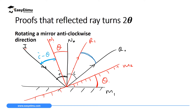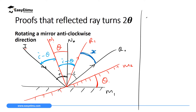Since this angle of incidence has reduced and the law of reflection must be obeyed, the reflected ray will also move close to the new normal N1, so that the angle of incidence equals the angle of reflection. The new reflected ray is R1. We are interested in finding angle x — the angle through which R0 moves to R1. The angle from N1 to R1 is also i minus theta.